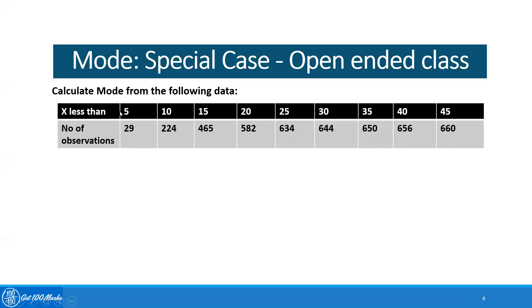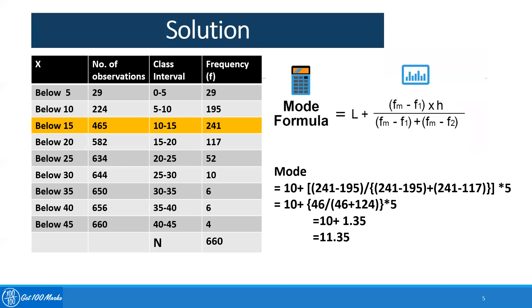So definitely you can make out if I take 0 to 5, it will be 29. But if I take 5 to 10, this number 224 will be changed. These types of questions are very common in university examinations. So let's see how to calculate mode.